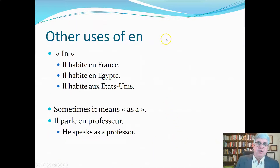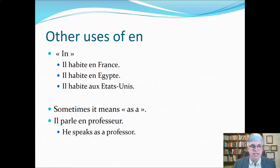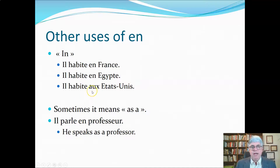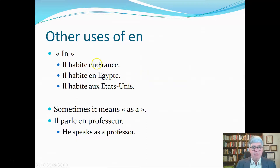Now let's change gears and talk about other uses of 'en.' The easiest one is when it means the word 'in,' like 'il habite en France' — he lives in France — or 'il habite en Égypte' — he lives in Egypt. Not all countries take 'en'; some take 'au' or 'aux' depending on their gender or whether they start with a vowel. We just need to be aware that the preposition used to introduce a country is 'en' or something in the 'au' family.